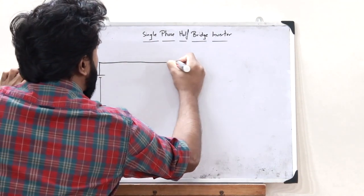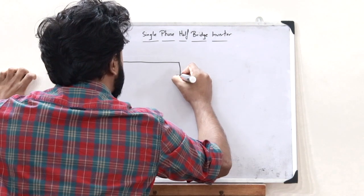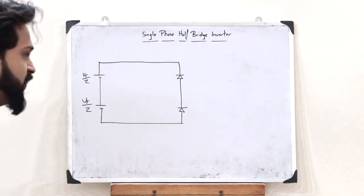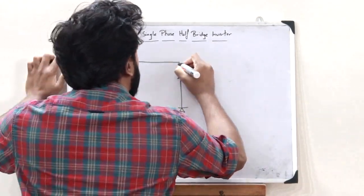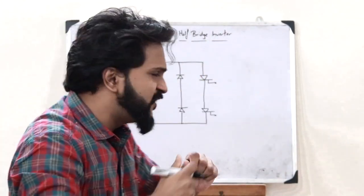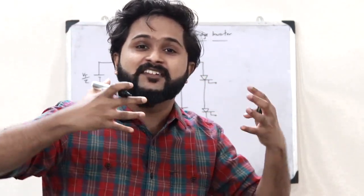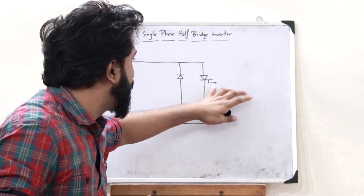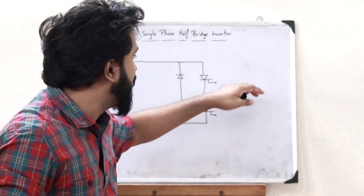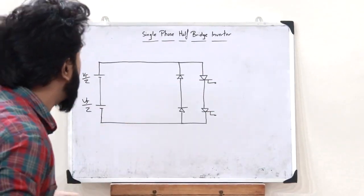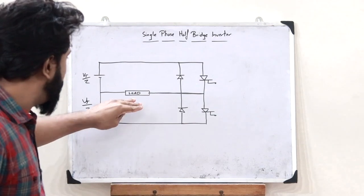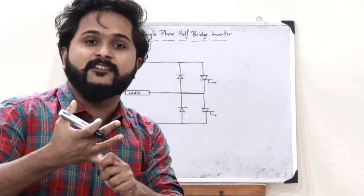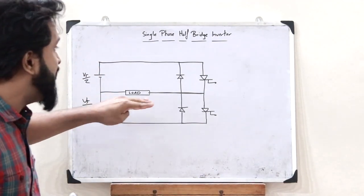Now these voltage sources are connected to two particular diodes. And across these diodes, another semiconductor device referred to as an SCR is connected. An SCR is a semiconductor device which has got a third terminal — when a triggering pulse is given to this terminal, it starts conducting electricity. Only when a triggering pulse is given will it conduct; otherwise it won't. A particular load is connected to this circuit, and this load is not solely resistive — it also has inductive and capacitive properties, so we can say this is an LCR load.